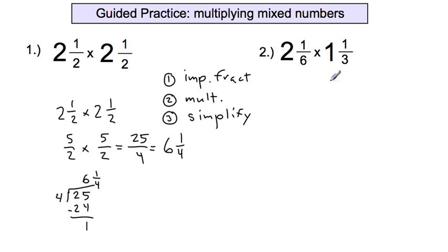Now, let's take a look at number 2 here. We have 2 and 1 sixth times 1 and 1 third. We'll start by writing out the problem. The next step is going to be turning these things into improper fractions. Here we have 2 wholes. Each whole has 6 parts to them. So it's 6 times 2 is 12 plus 1 equals 13 sixths. We're going to multiply that by 3 times 1 is 3 plus 1 is 4 thirds.